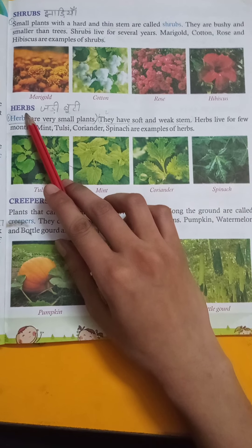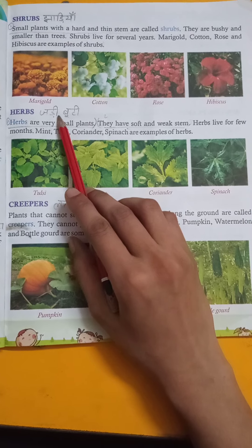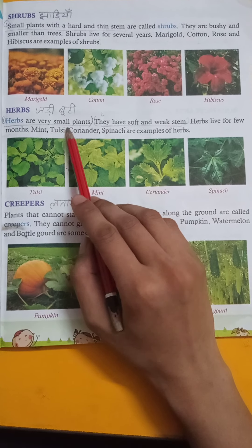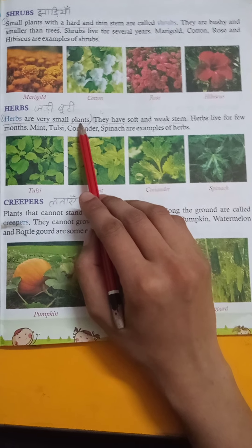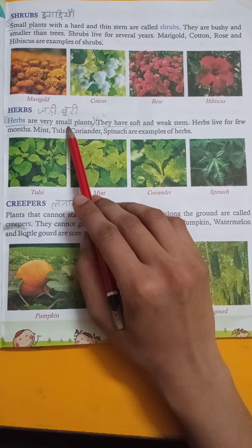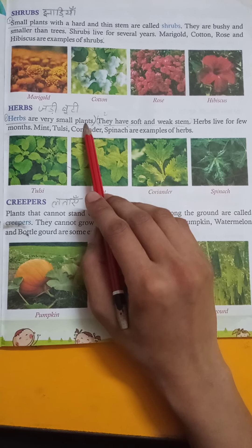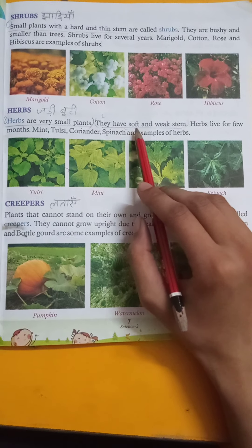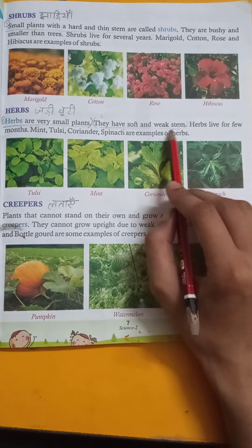Herbs — herbs means choti boti. Herbs are very small plants. They have soft and weak stems.